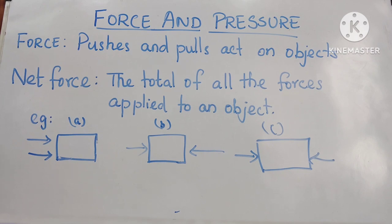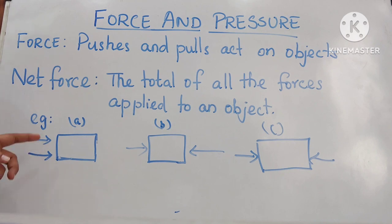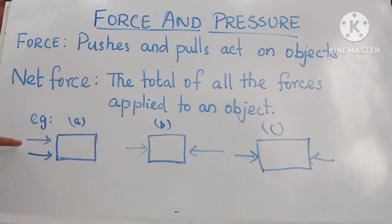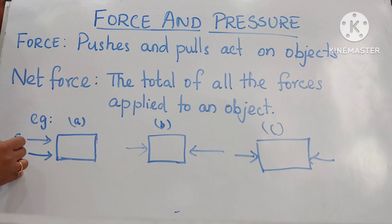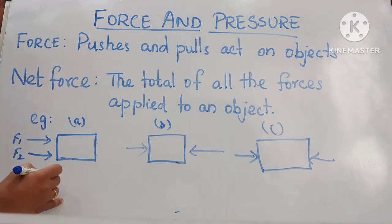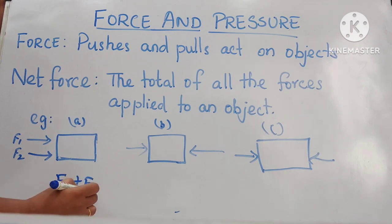For example, I have given three cases. First, if two forces F1 and F2 act on a body from the same direction, the net force is the sum of the two forces, F1 plus F2.